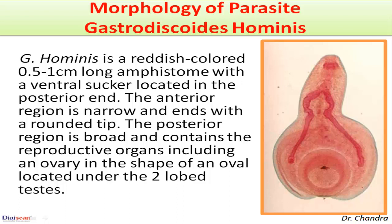Gastrodiscoides hominis is a reddish colored parasite which is 0.5 to 1 cm long and has a ventral sucker located in the posterior end. The anterior region is narrow and ends with a rounded tip. The posterior region is broad and contains the reproductive organs, including an ovary in the shape of an oval located under the two-lobed testes.